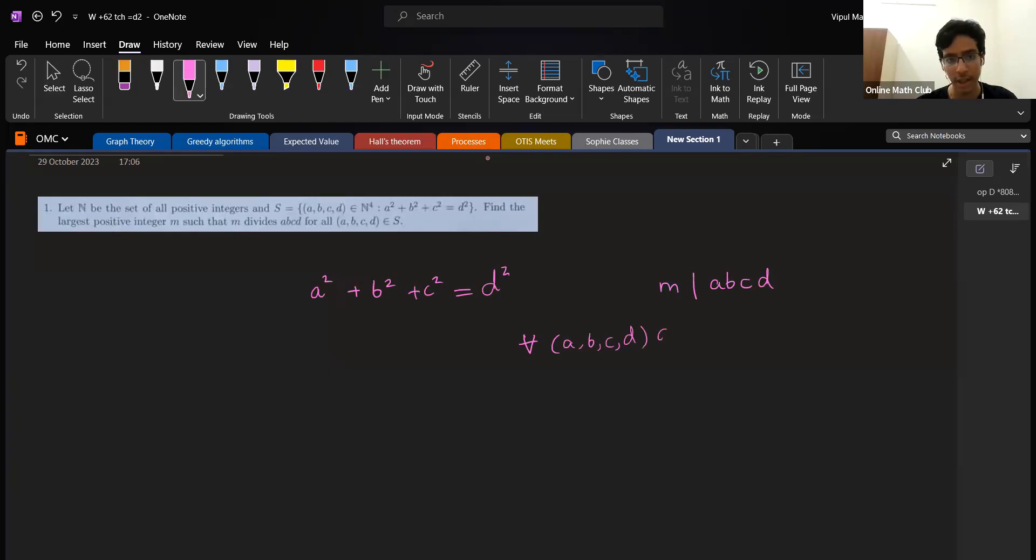For starters, I can see quite clearly that one square plus two square plus two square is three square, because 1, 4, 4, 9. So that's cool. In fact, we have that abcd equal 12 is a solution, so m has to divide 12 for starters. So m is already bounded by 12 because it has to belong to 1, 2, 3, 4, 6, 12.